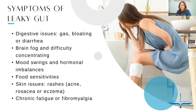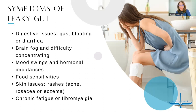Brain fog and difficulty concentrating are symptoms because we have a similar lining that creates the blood-brain barrier, just like the gut barrier. The factors that cause leaky gut can sometimes cause a leaky brain. Think about all those toxins seeping through our broken gastrointestinal barriers — they end up in our blood, and the blood inevitably reaches our brain. So we get brain fog, difficulty concentrating, attention problems, mood swings, and hormonal imbalances. Food sensitivity is another major sign of leaky gut.